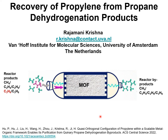The focus of this presentation is the recovery of propylene from a propane dehydrogenation reactor, which in general would consist of by-products: methane, ethylene, propane, and propylene.